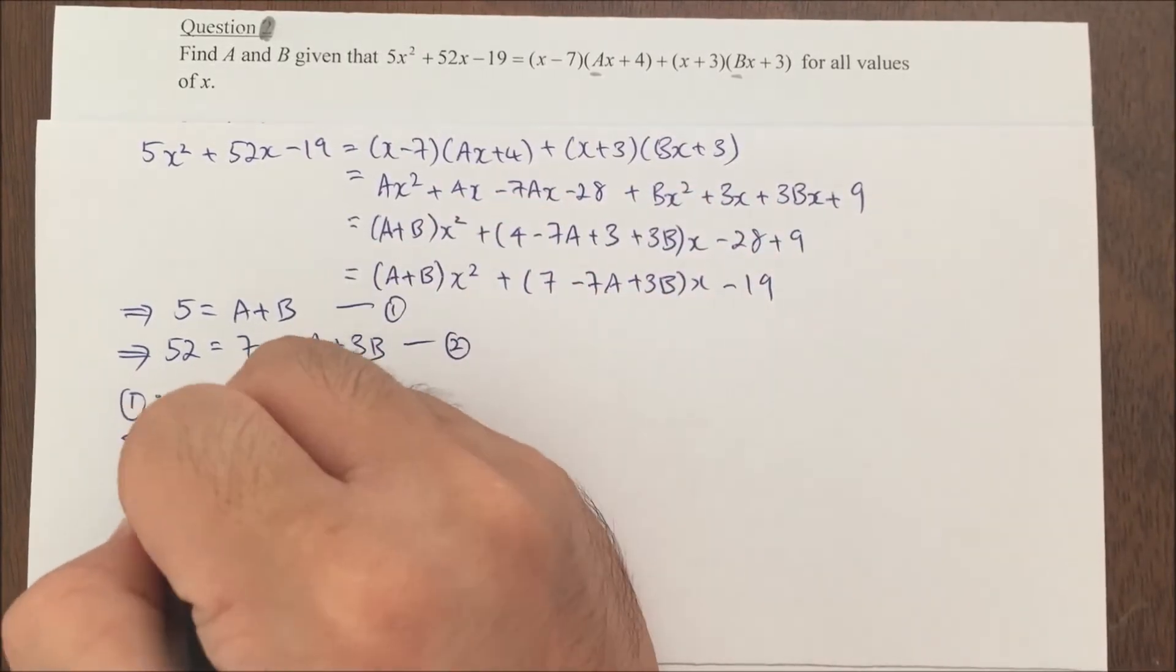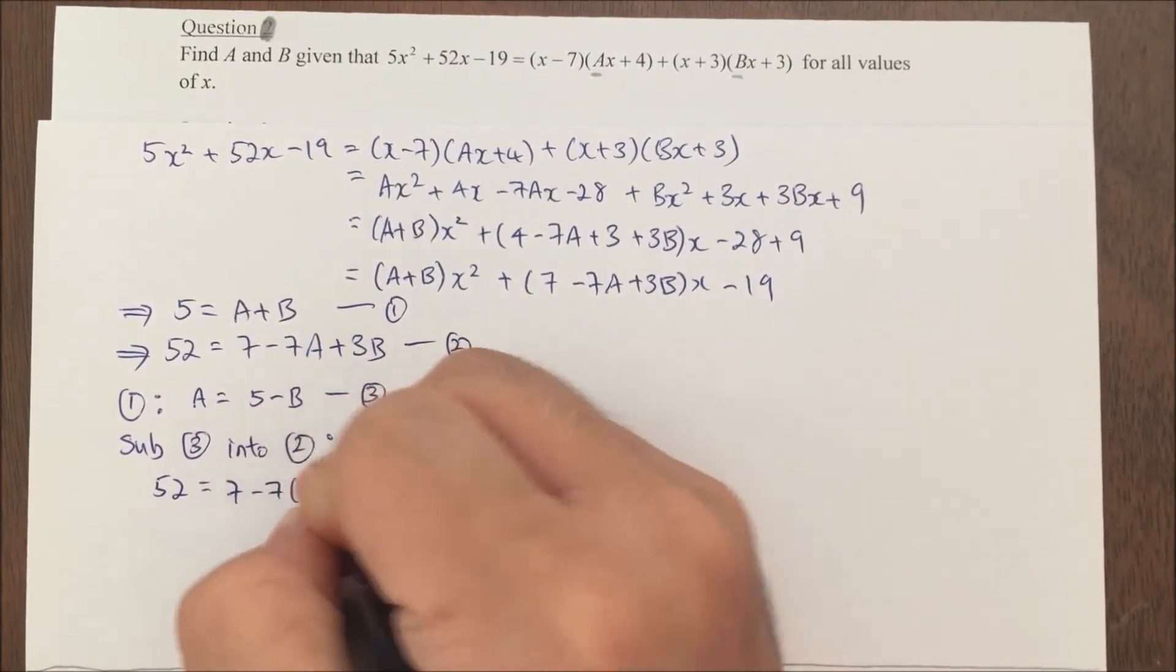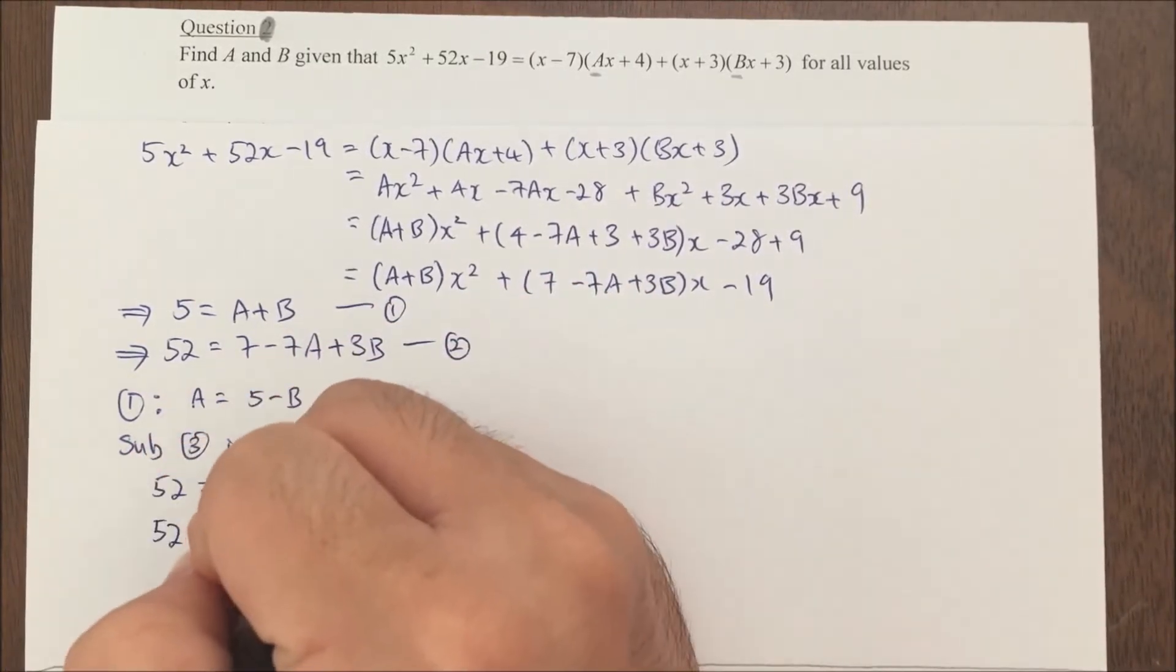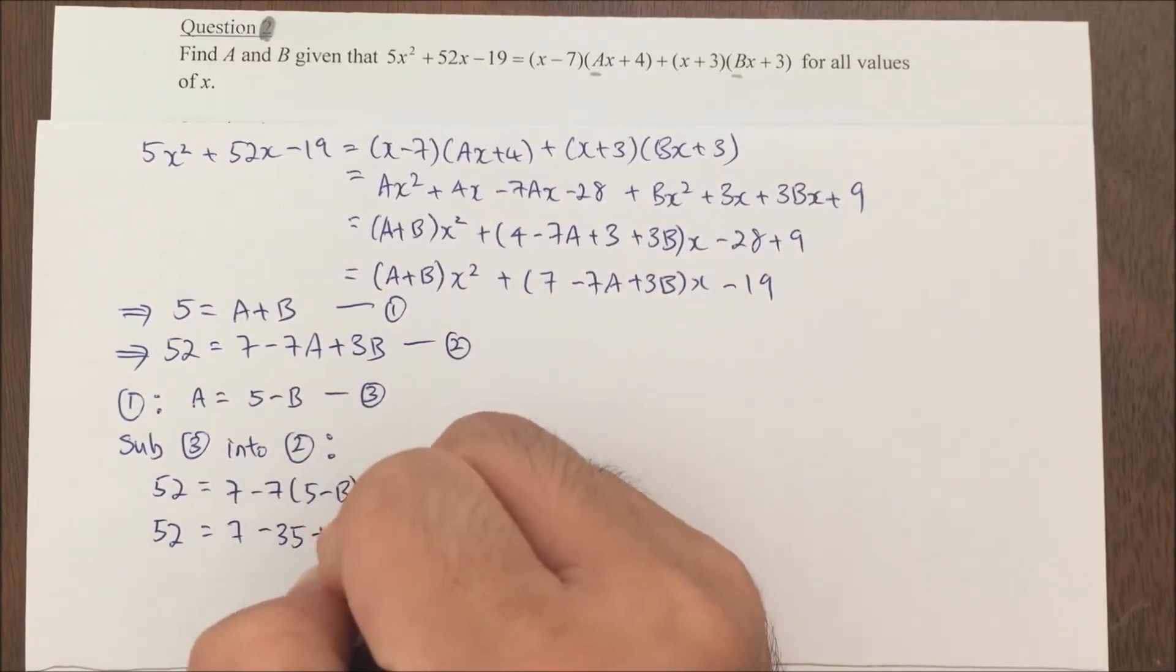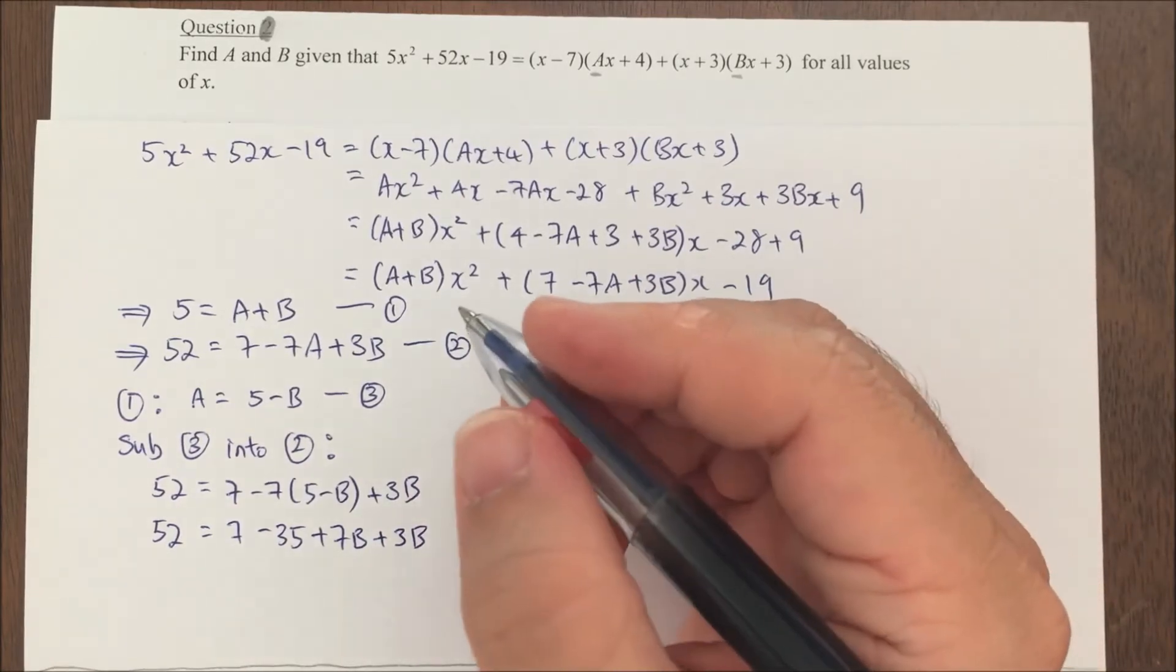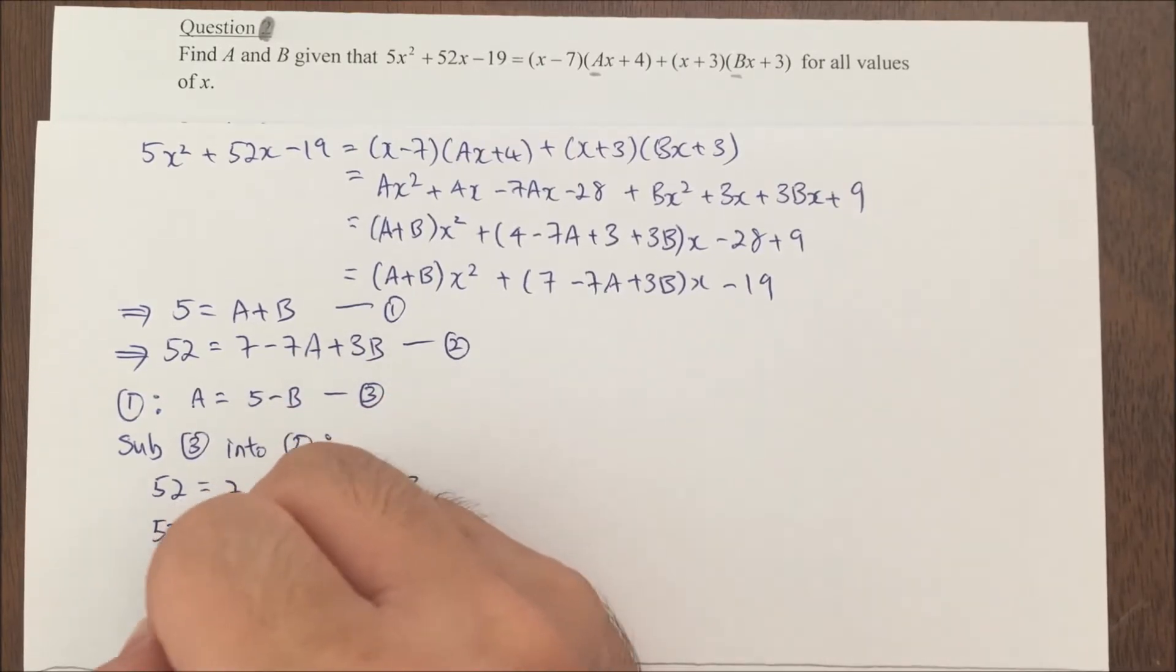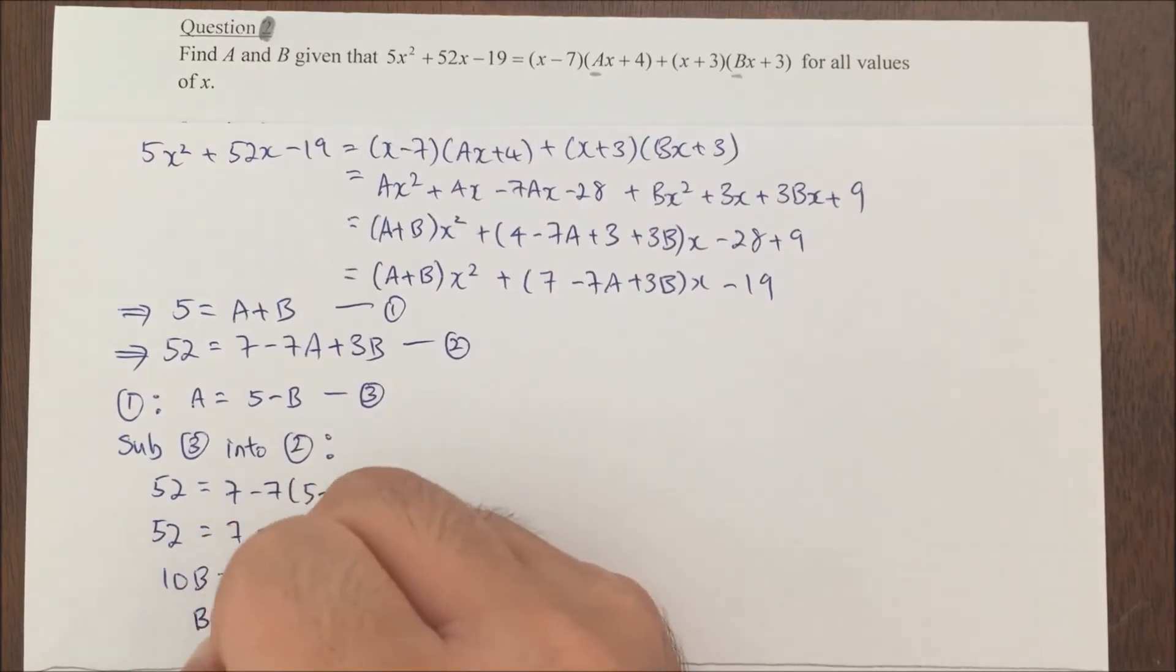So I'll have 52 equals 7 minus 7(5 minus b) plus 3b. It's equal to 7 minus 35 plus 7b plus 3b. You can actually see that if I bring over, this is 10b. My 10b actually equals 80. And my b equals 8.